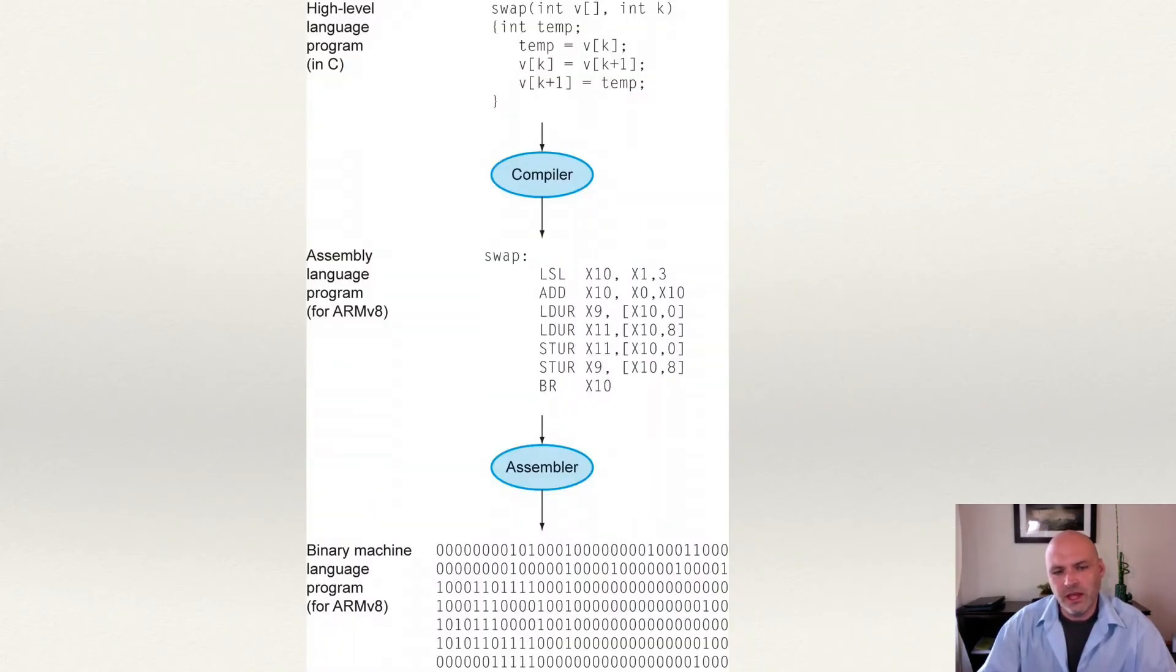This abstraction that we're looking at here is a very important view for a programmer to understand. This is how we take our high-level code and how our high-level code actually becomes the binary that runs on the computer. Now, we're going to be talking about the details of this in much more depth later on. Right now, I just want to use it as an example of important abstractions that we're going to learn a lot more about.